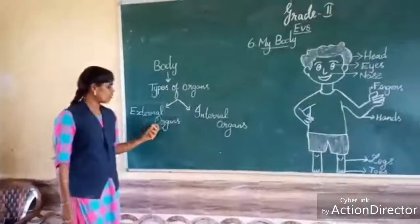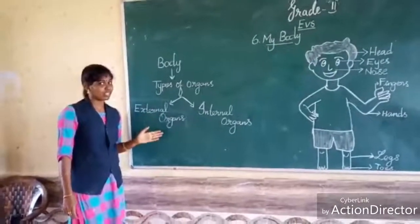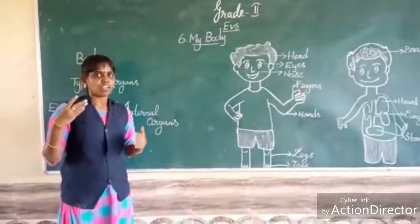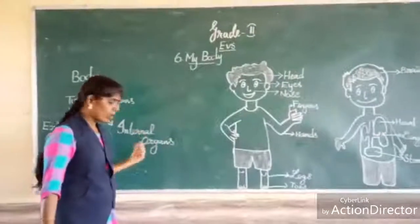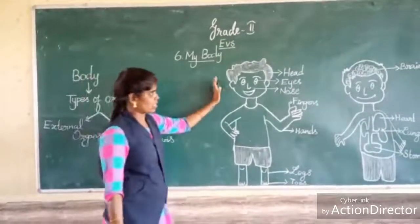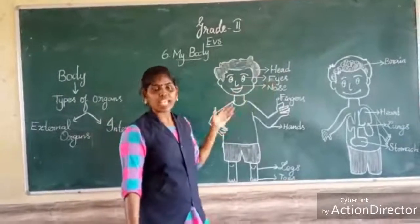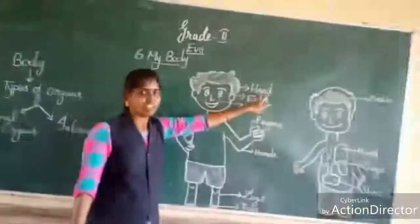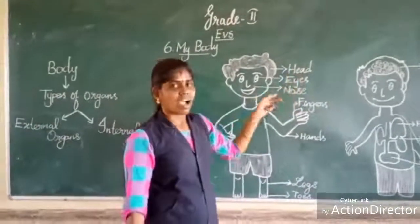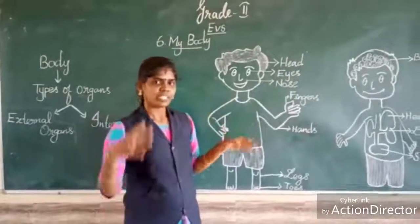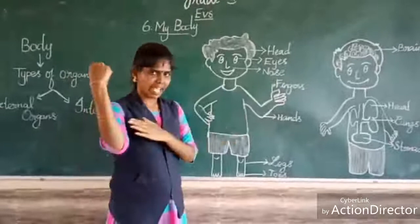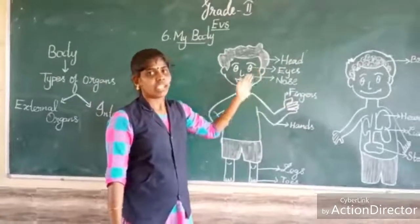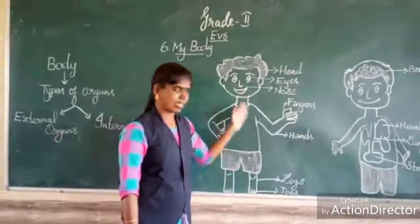What is the meaning of external organs? Which part we can see outside? That is called external organs. Which part we can see outside? Head, eye, nose, fingers, hand, leg, toes. These parts are called external organs.